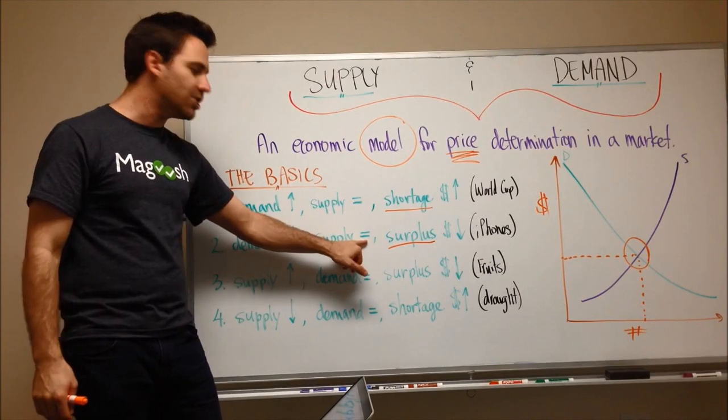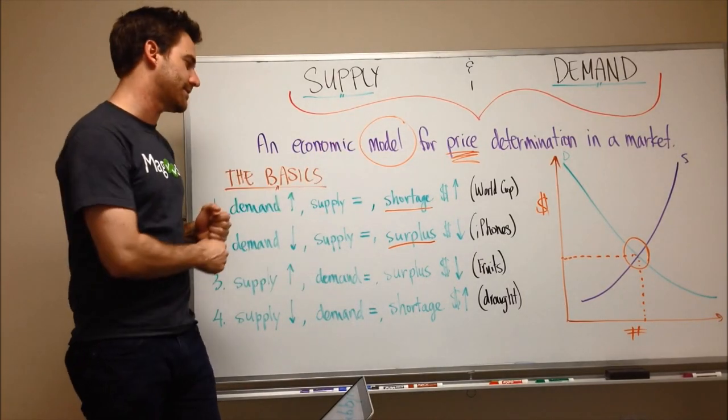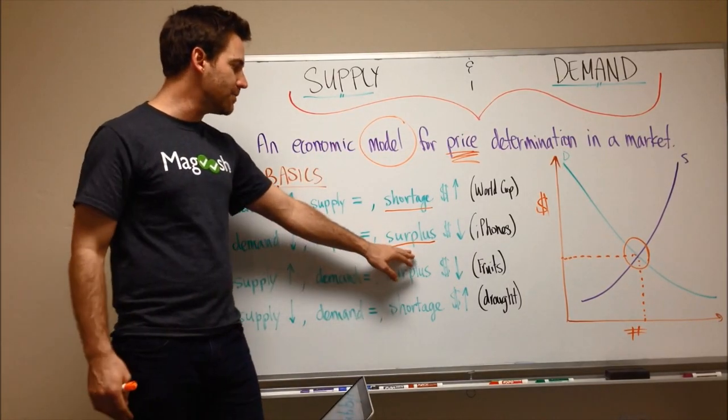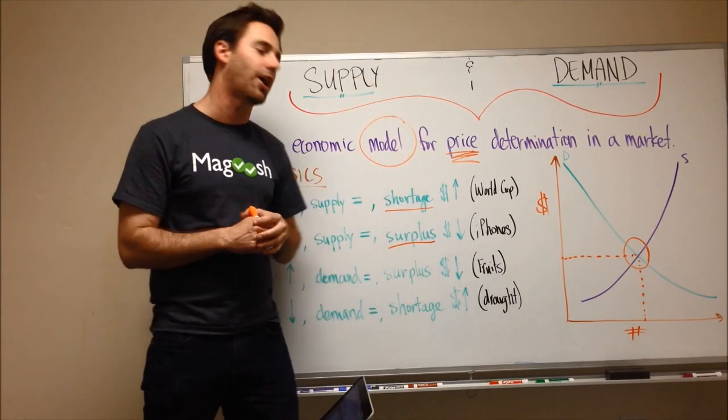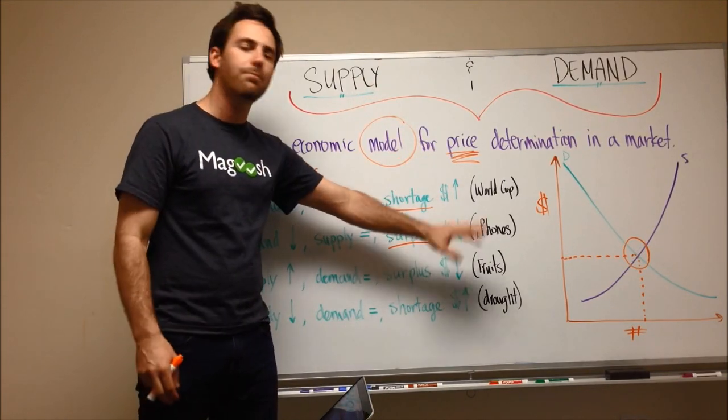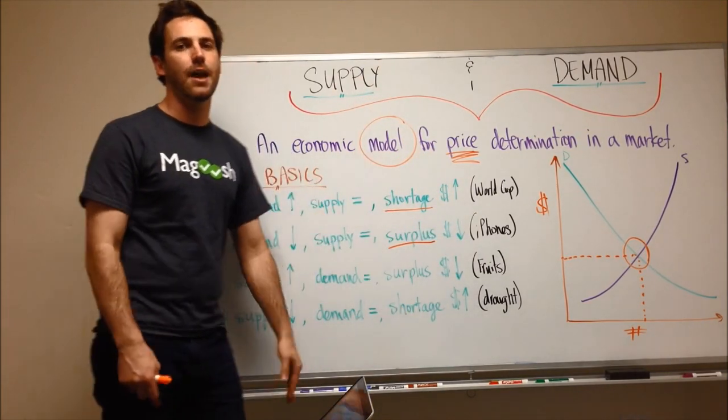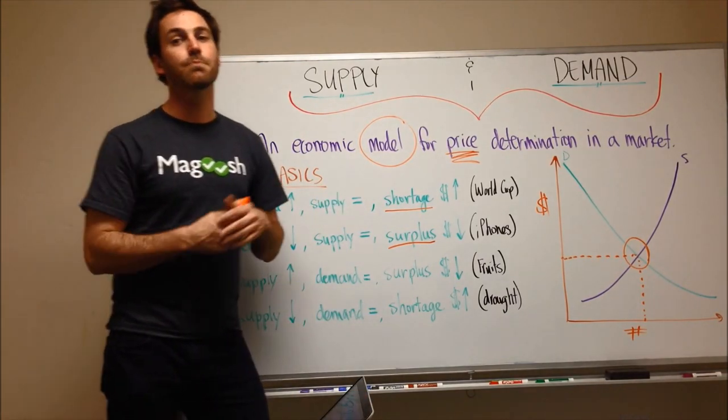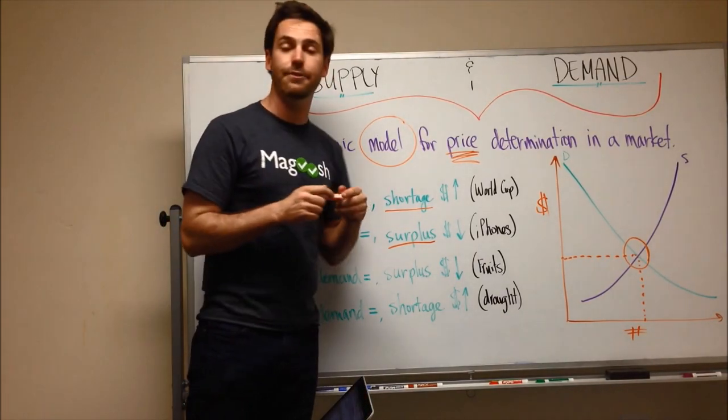Supply probably changes a little bit, but it's relatively the same. And so what happens is you have a surplus of those older iPhones, and so the price is dropped so that people would be encouraged or more willing to purchase one of those older iPhones.